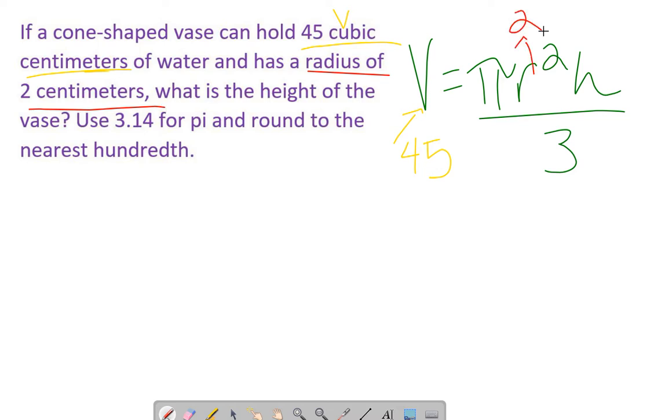It told us at the beginning to use 3.14 for pi. And it wants to know the height. Interestingly, height is the only variable left unsolved. Let's plug in all our information. Once we do that, we'll erase the thing in the top corner.